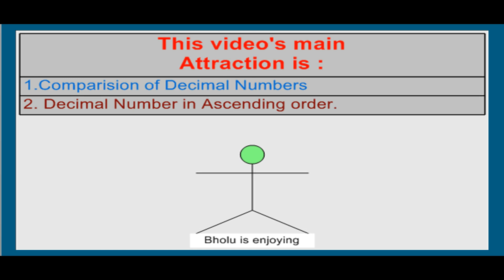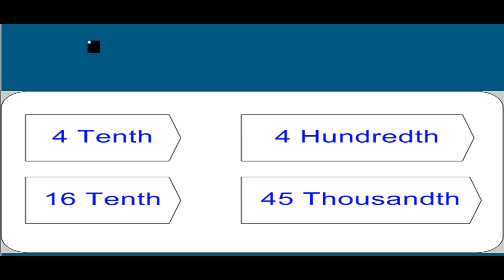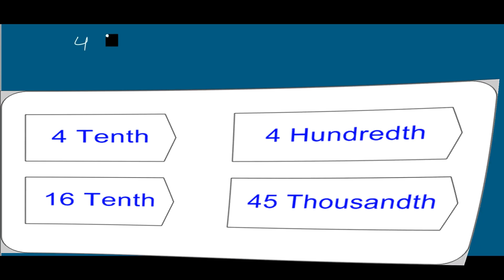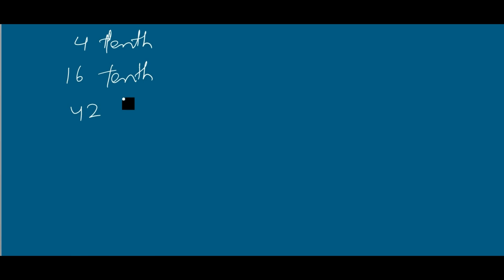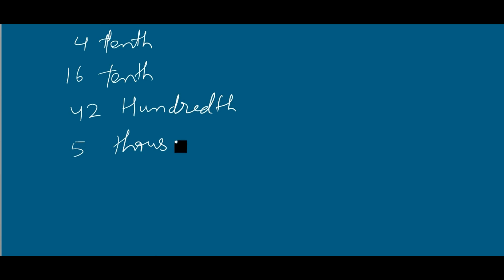I already explained the decimal number concept in previous videos. In this session I am going to tell you about writing a digital number which is written in words, and how to write it in digital form. For example, you may have seen in your math book: four-tenth, sixteen-tenth, forty-two hundredths, or five-thousandths. I noticed these types of sums are also given in the class four book.